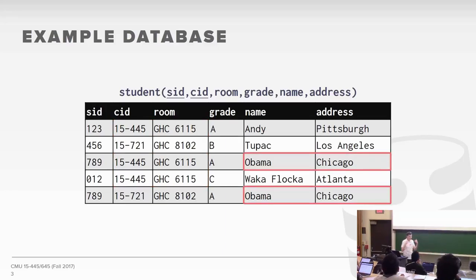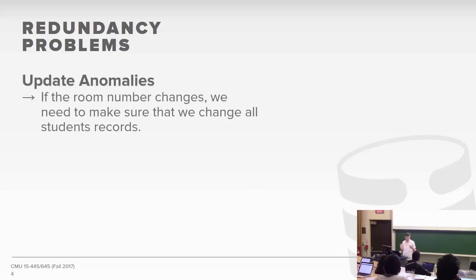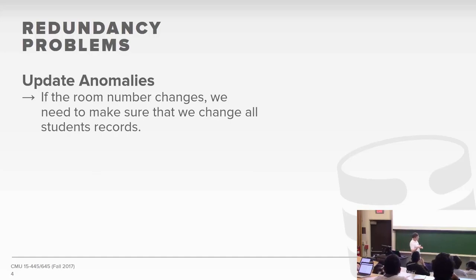This boils down to the idea of redundancy in our schema, and because we have redundant information, certain anomalies can occur. The first is an update anomaly: if the room number changes for a course, we need to go through and update all records of students that took that course. The database system can't automatically propagate that update to copies, because it doesn't know that the attribute values are linked together across different tuples.